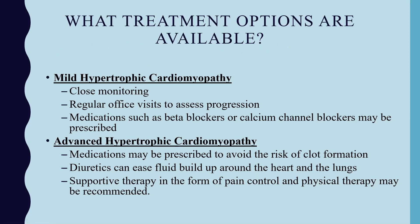For treatment, if the pet has been diagnosed with mild hypertrophic cardiomyopathy, close monitoring is often advisable, with regular office visits to assess disease progression. Medications such as beta blockers or calcium channel blockers may be prescribed, along with a low dose of aspirin or Plavix to prevent thromboembolisms. In advanced cases, diuretics may help ease fluid buildup around the heart and lungs, and supportive therapy including pain control and physical therapy may be recommended if the cat is experiencing FATE syndrome.